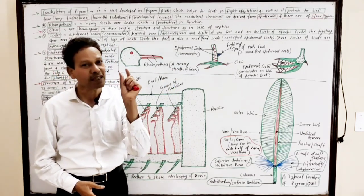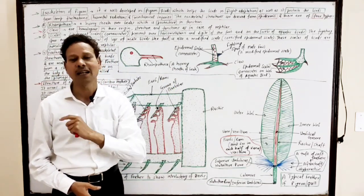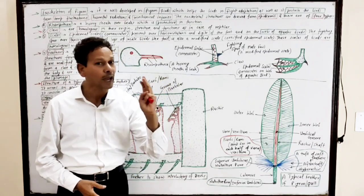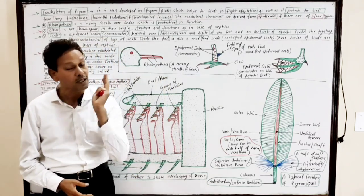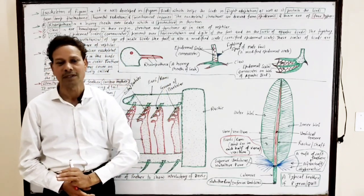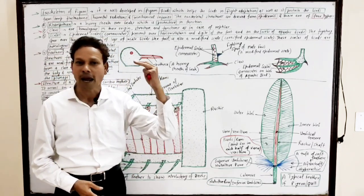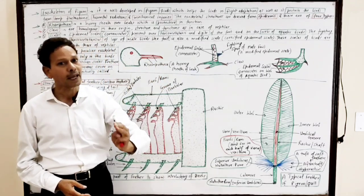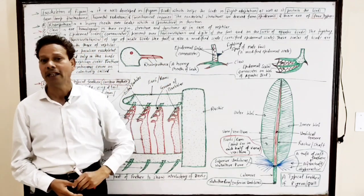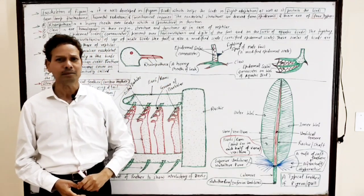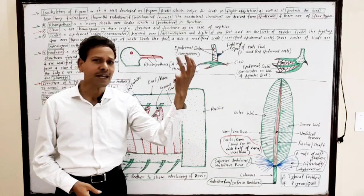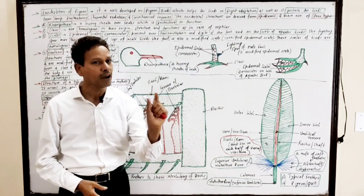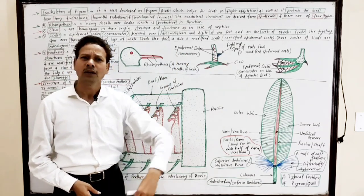Dear students, exoskeleton consists of four types of exoskeletal structures: rampotheca, claws, scales, and feathers. All these exoskeletal structures are derived from the epidermis.